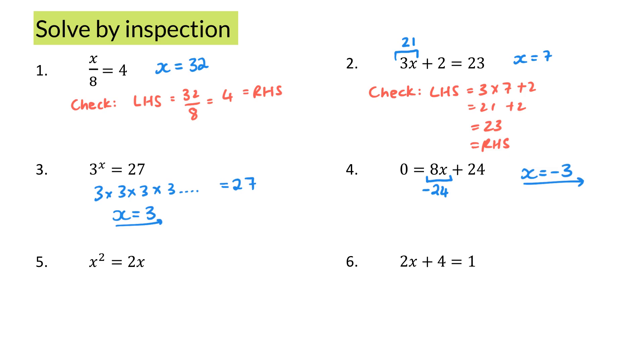Now the next question, question 5, says x squared is equal to 2x. Now you might have looked at that and said, I know, x is going to equal to 2. Or you might have looked at the equation quickly and said, no, x is equal to 0. Hmm, which one is correct? Let's check quickly.